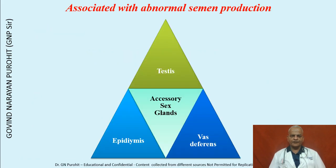We discuss impotentia generandi associated with abnormal semen production. This could be because of pathologies of the testes, the epididymis, the vas deferens, and the accessory sex glands.